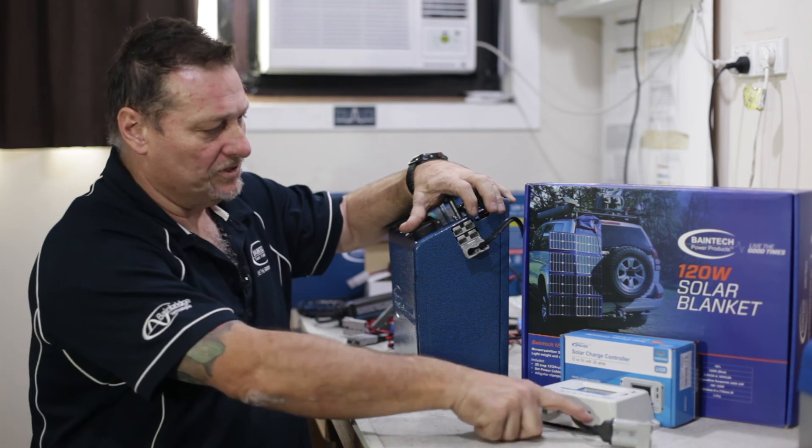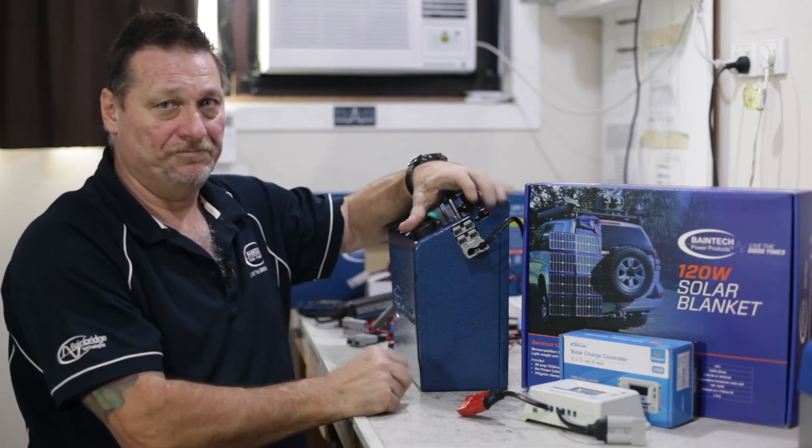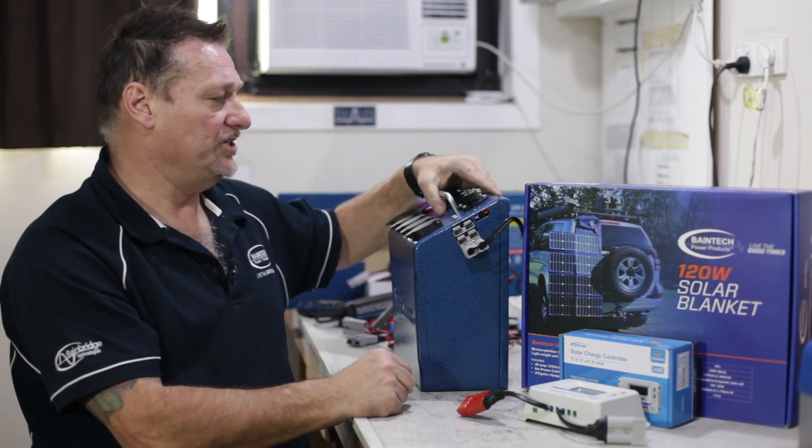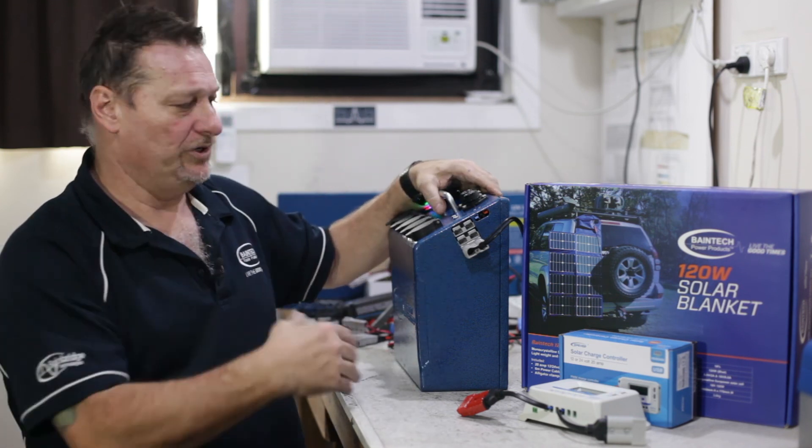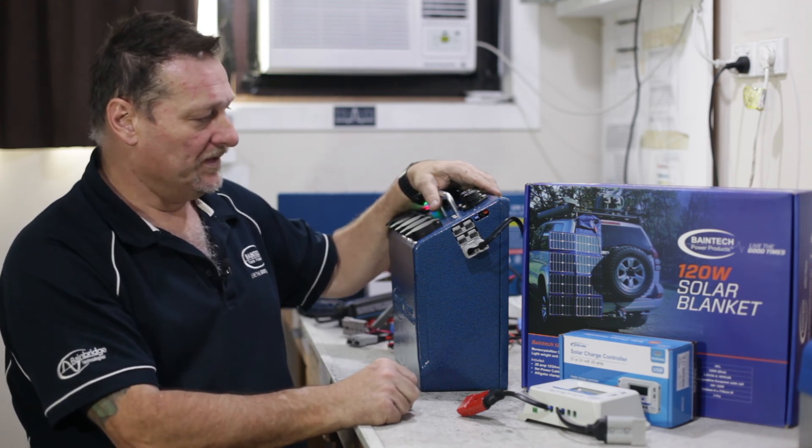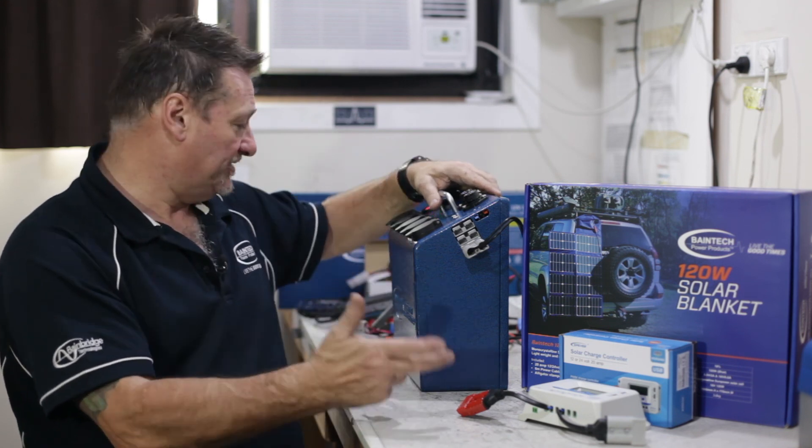The DC gives you that extra little bit of charging whilst you are driving if you're on a long trip or you're traveling around for a period of time from spot to spot. Otherwise that's all your modes covered for charging.